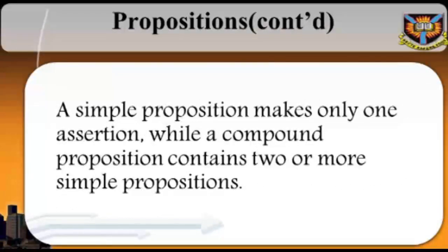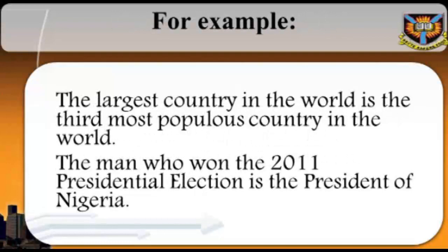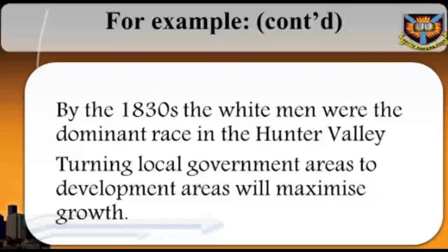A simple proposition makes only one assertion, while a compound proposition contains two or more simple propositions. In other words, you assert more than one proposition in a compound proposition. For example: 'The largest country in the world is the third most populous country in the world.' 'The man who won the 2011 presidential election is the president of Nigeria.' 'By the 1830s, the white men were the dominant race in the Hunter Valley. Most of the prime land along the main river frontages had been taken up for crops and cattle and settlers were moving into the back country north and west of the Hunter.'